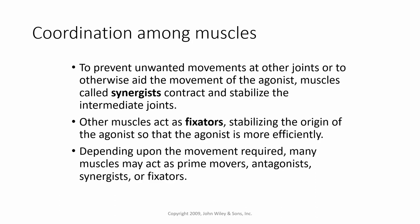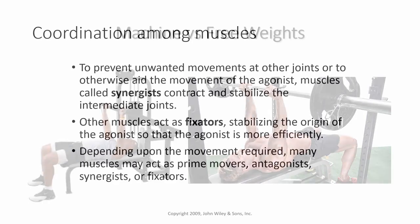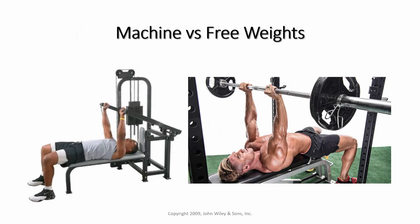To prevent unwanted movements and aid the agonist, muscles called synergists contract and stabilize intermediate joints. Other muscles act as fixators, stabilizing the origin of the agonist so it can work more efficiently. This raises a practical point: machines tend to isolate muscle groups, whereas free weights require fixators and stabilizers to balance the bar, making them more demanding overall.